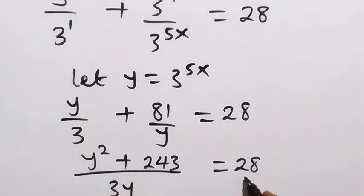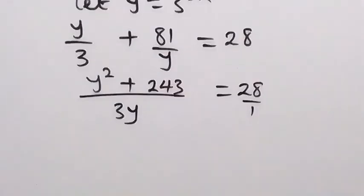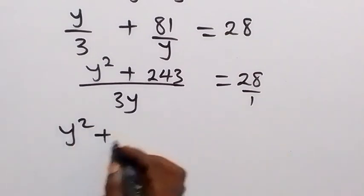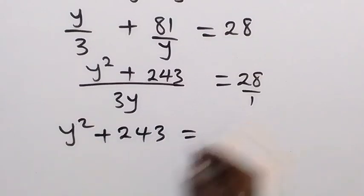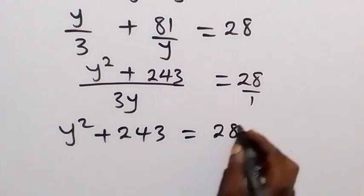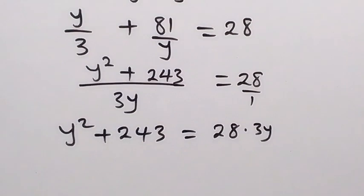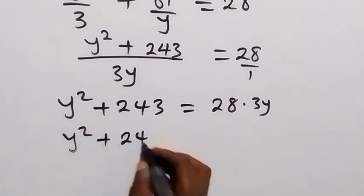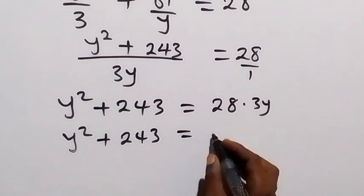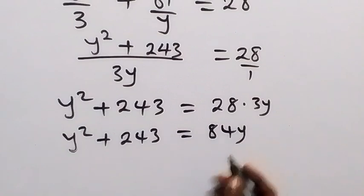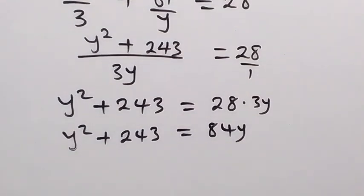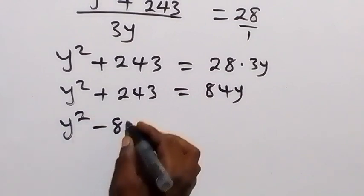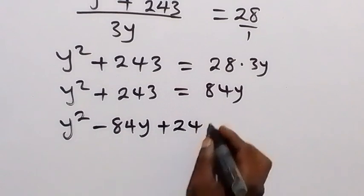When we cross-multiply, we get y squared plus 243 equals 28 times 3y, which gives us 84y. Bringing 84y to the other side, we have y squared minus 84y plus 243 equals zero.